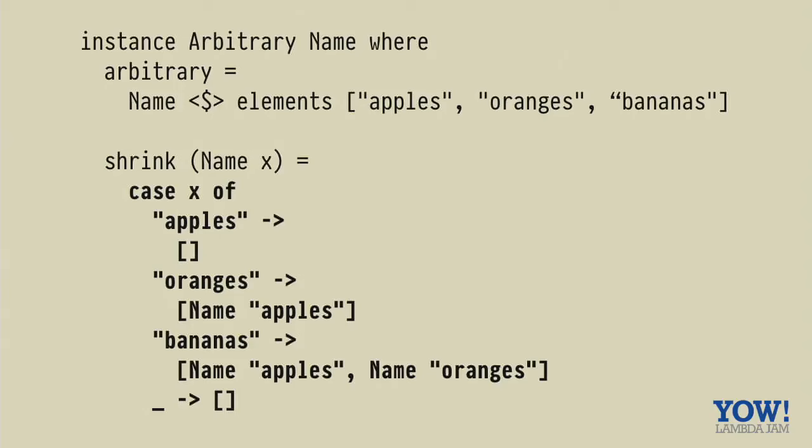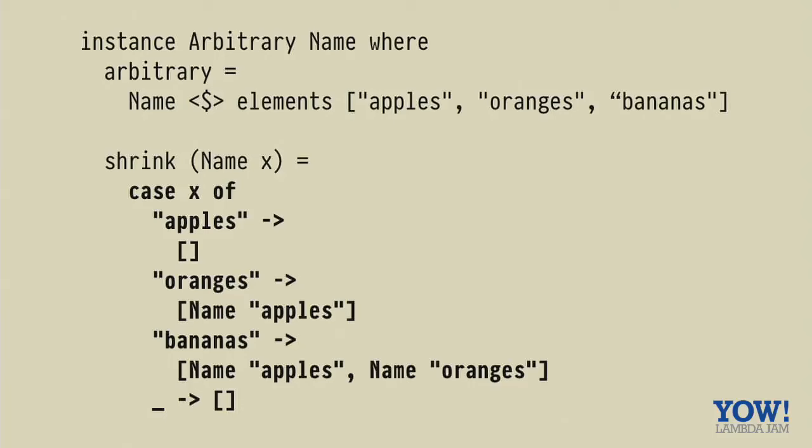Okay. So if we come to our name example and implement shrink for this, you might think this is a bit over the top, but what we've done here is try and make it shrink towards apples. So if it's bananas, then smaller than bananas might be apples or oranges. If it's oranges, then smaller than that would be apples. And the reason why you might want to do that is because if you get a counter example, which only has apples, then perhaps the name of the line item is not really that interesting. So I think it's good to be able to shrink these kind of lists down, even though it might seem superfluous.